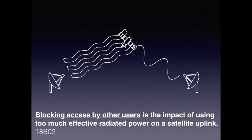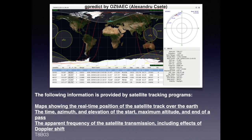Because satellites are open for everyone, we need to be good citizens and not overpower somebody else's signal, so we use the minimum power necessary. For the exam, know that blocking access by other users is the impact of using too much effective radiated power on a satellite uplink. There are many programs used for tracking satellites; my favorite is the open source G-Predict by OZ9AEC. Know for the exam what information satellite tracking programs provide.